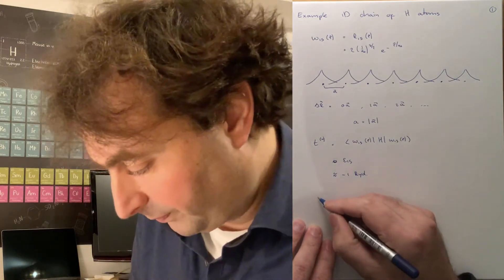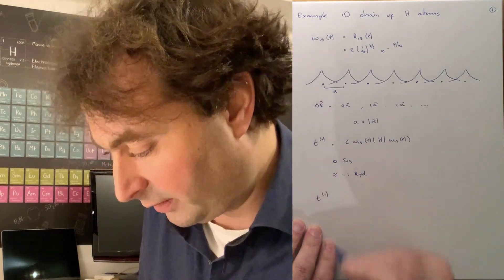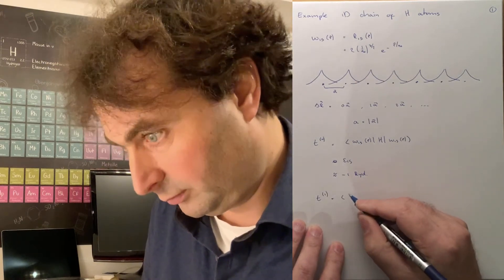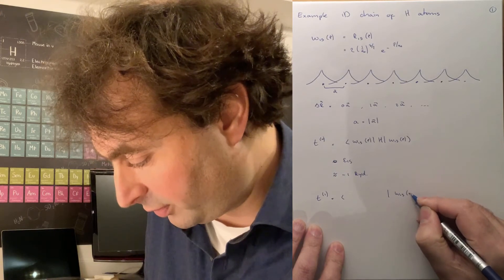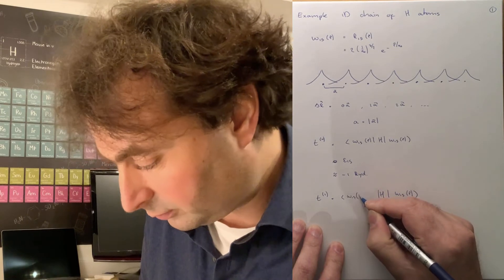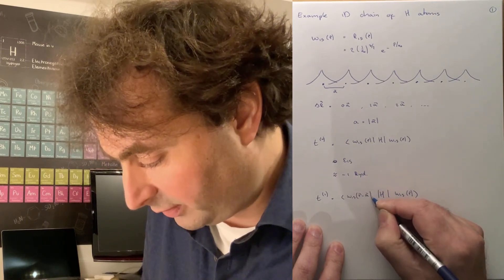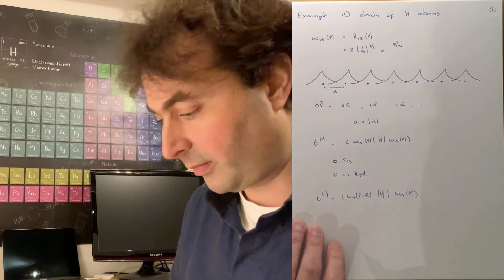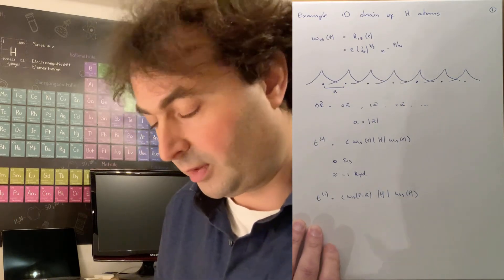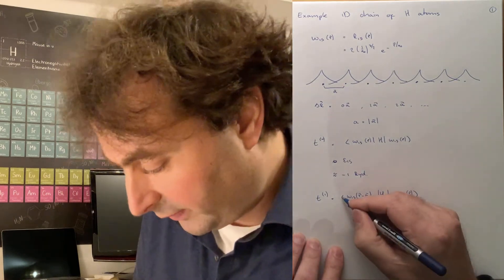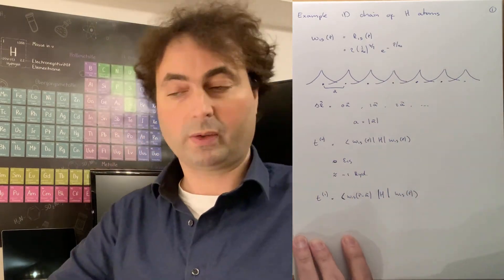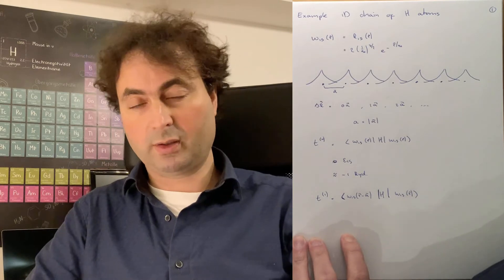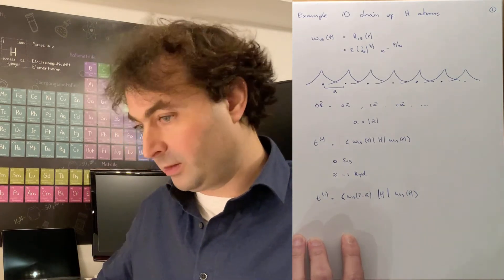Now we can have a look at the nearest neighbor hopping, where we hop from our wave function centered at the origin with the Hamiltonian to the wave function centered at A. Well, in order to calculate this matrix element, we are going to have a look at both the potential as well as the kinetic energy.